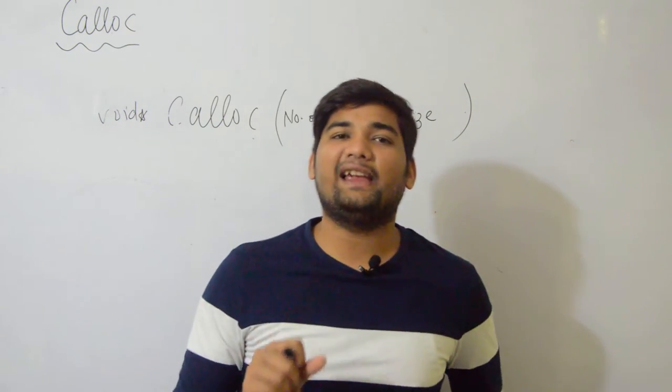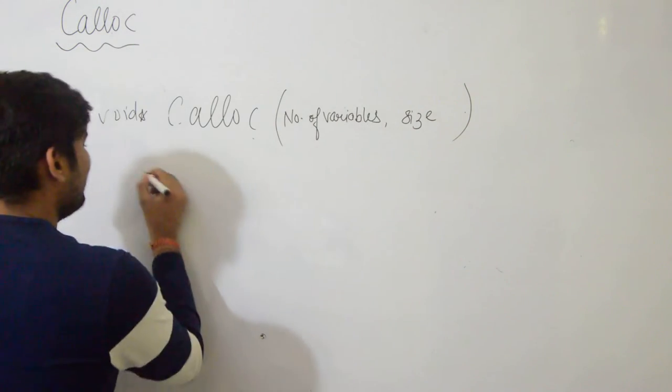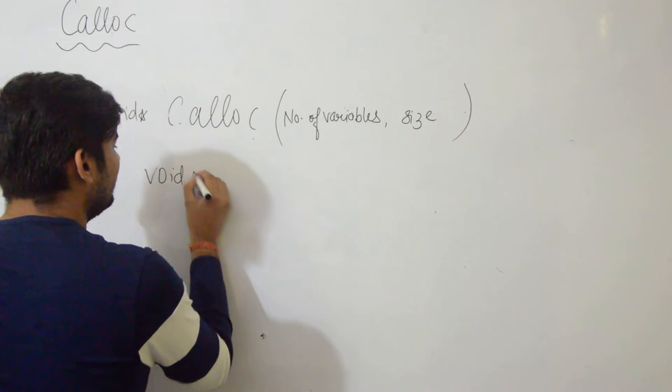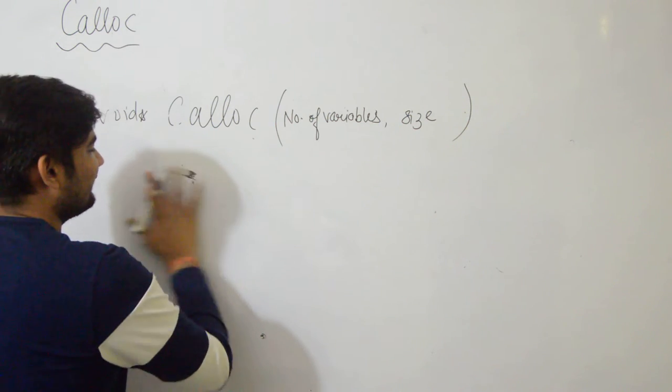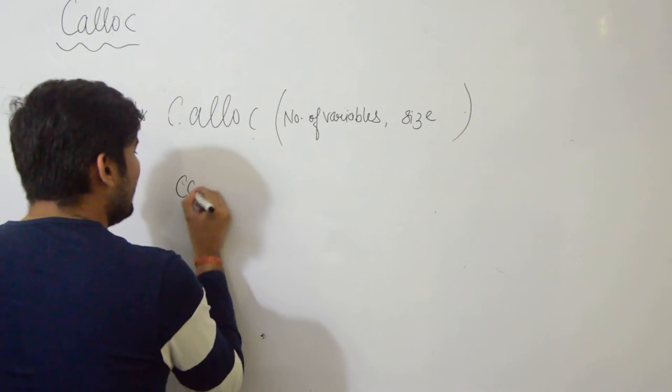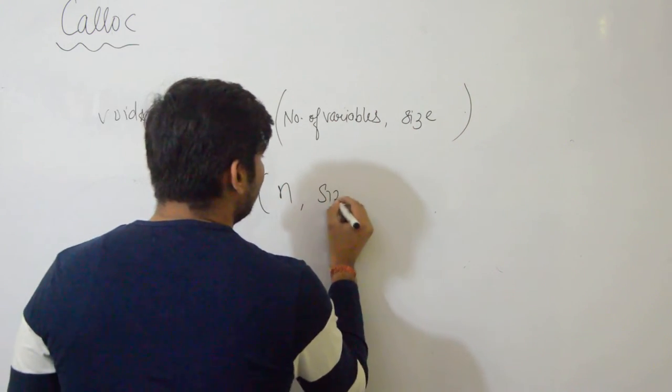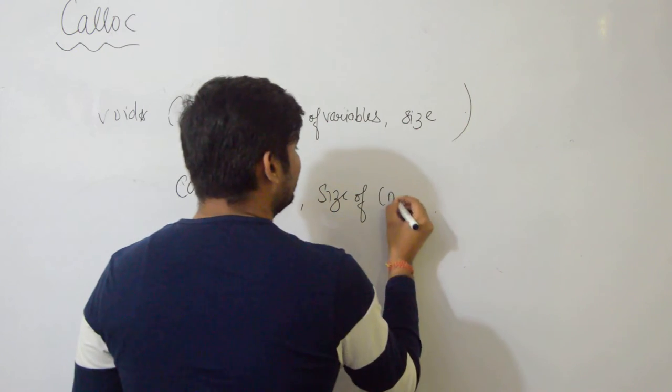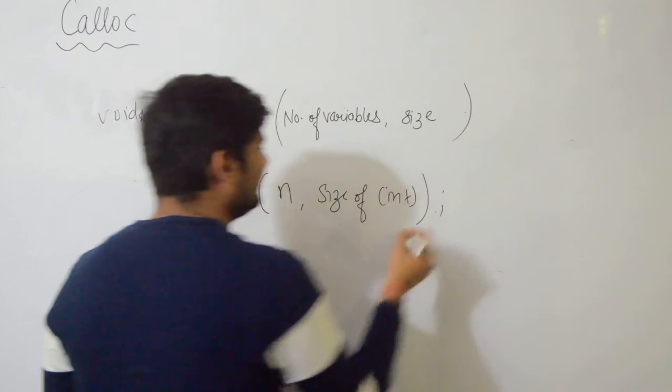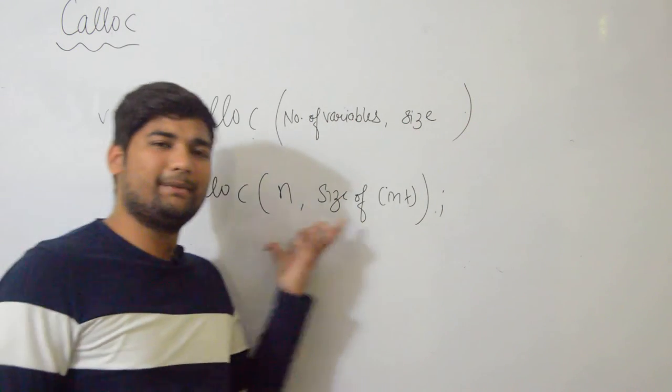For example, if you need memory from calloc to store 10 integers or n integers, and the user says to store n integers, you write void pointer, then call calloc with n comma sizeof int.